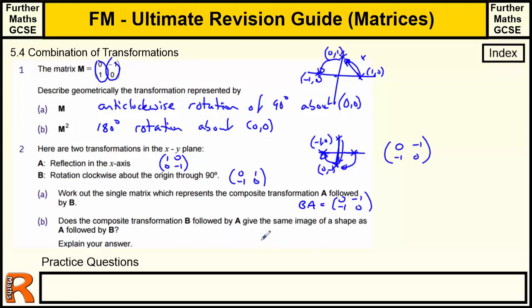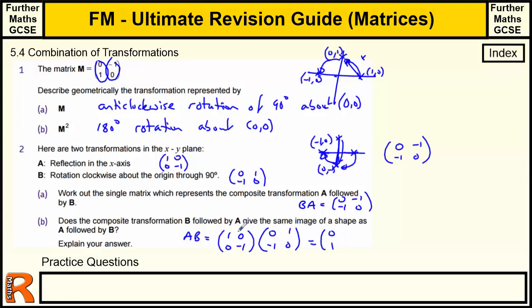Does the composite transformation B followed by A give the same image as A followed by B? B followed by A is matrix product AB. Computing: reflection matrix [[1,0],[0,−1]] times rotation matrix [[0,−1],[1,0]]. Working out: 1×0+0×1=0, 1×(−1)+0×0=1 wait — result gives [[0,1],[1,0]]. This represents a reflection in the line x=y, because the two points simply swap over. This is different from A followed by B, so the order matters.